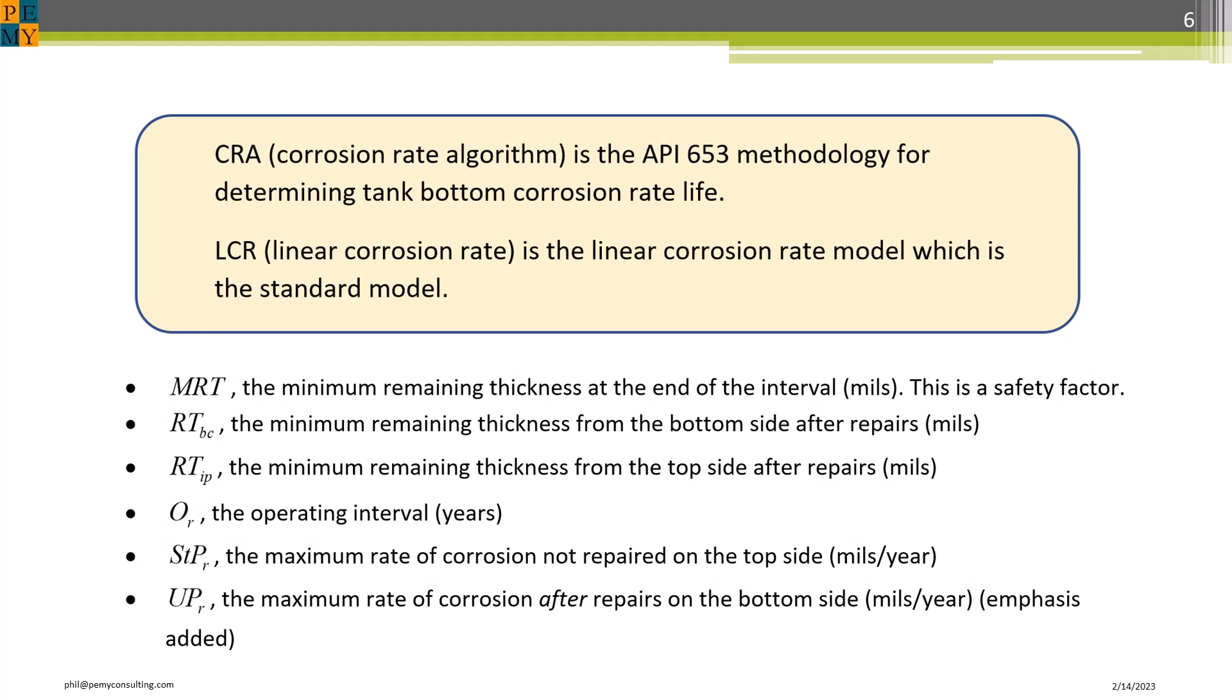To understand penetration of tank bottoms by corrosion, you must understand that there is a universally accepted practice, which I will refer to as the linear corrosion rate, or LCR model. But because API 653 is a black box, I will refer to the API 653 method as CRA for corrosion rate algorithm, because it is an algorithm and not a model. It turns out that the CRA is both conservative and liberal, depending on where you are in the universe of top side and bottom side corrosion rates.